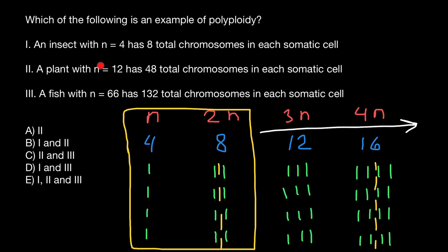A plant with n equals 12 has 48 total chromosomes in each somatic cell. And somatic cell would be all the cells in our organism except sex cells. We see that 12 is 4 times smaller than 48. That means that this organism is tetraploid and has 4 full sets of the chromosomes. So it has 4 chromosomes number 1, 4 chromosomes number 2, 4 chromosomes number 4, and so on. So this is going to be polyploid organism.